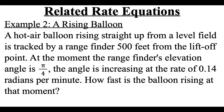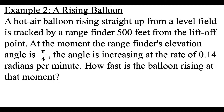In this example, a hot air balloon is rising straight up from a level field, being tracked by a rangefinder 500 feet away from the liftoff point. At the moment the rangefinder's elevation angle is π/4, the angle is increasing at a rate of 0.14 radians per minute. We want to figure out how fast the balloon is rising. Step one: we want dh/dt, and we know dθ/dt = 0.14 radians per minute.